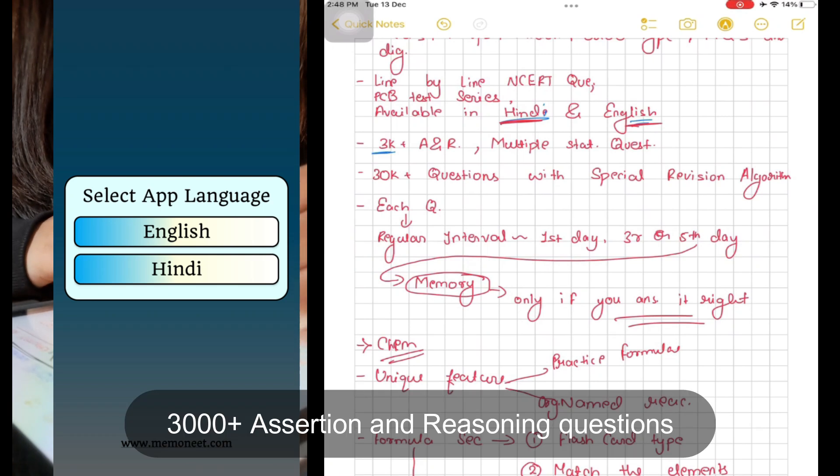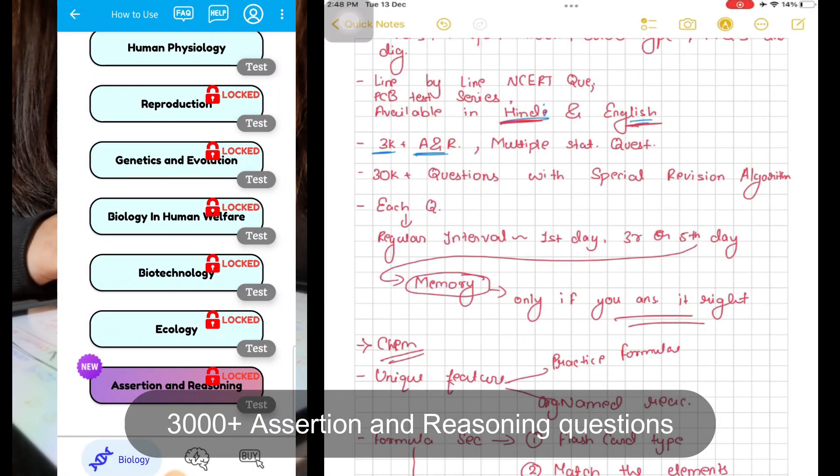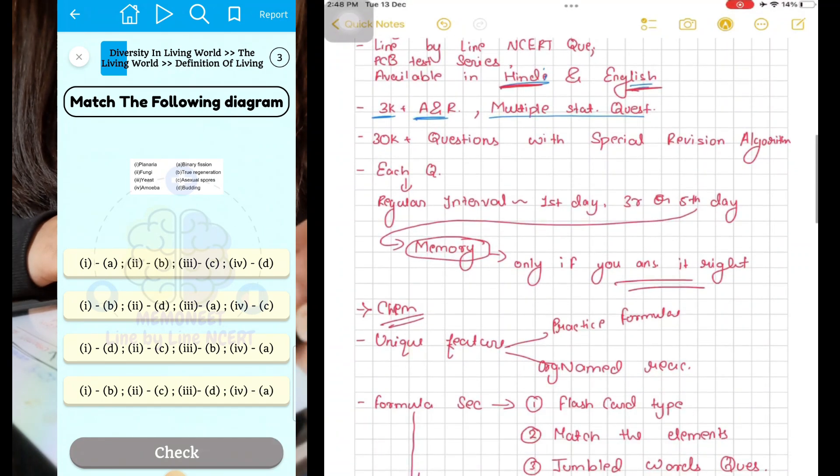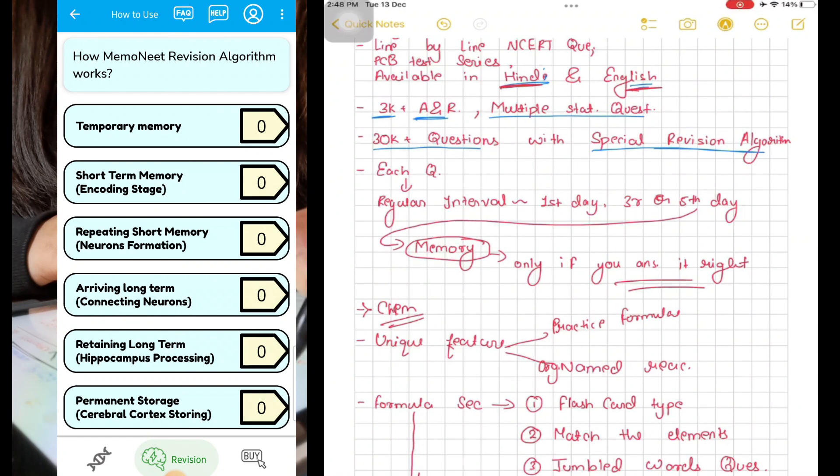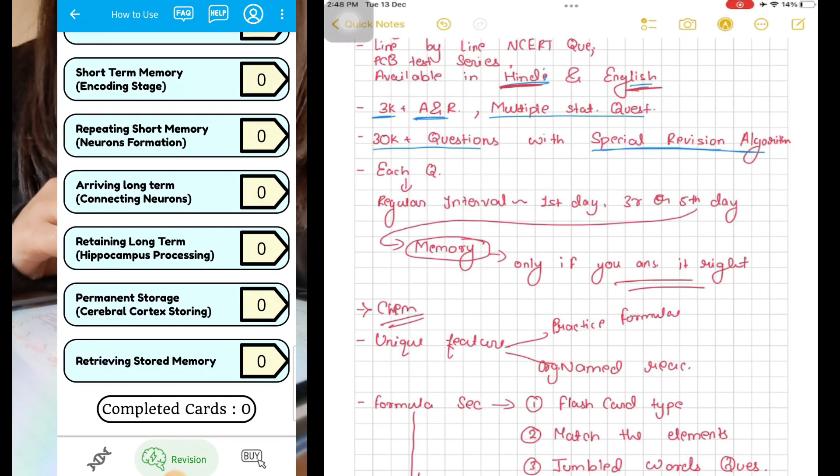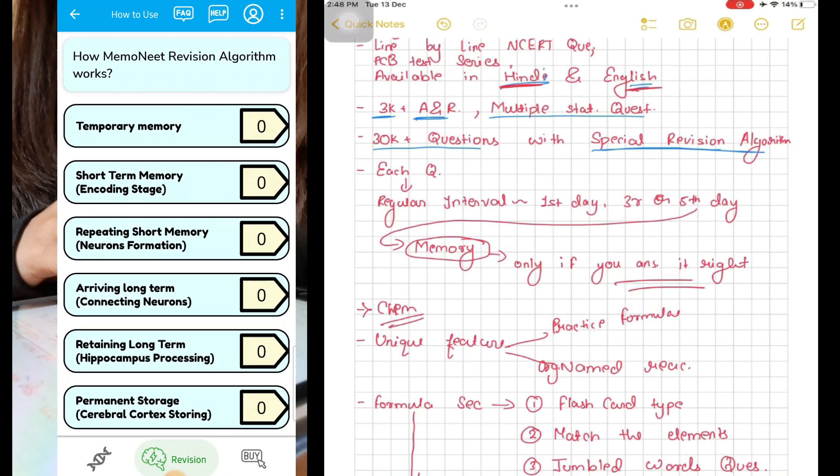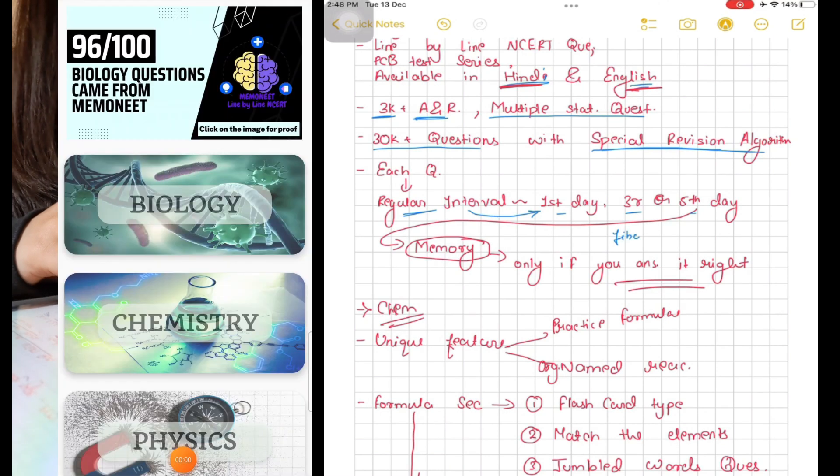A special revision algorithm. Each question you practice in Memo NEET appears in regular intervals like first day, third day, fifth day in Fibonacci series, and only moves to the next level of memory if you answer it right.